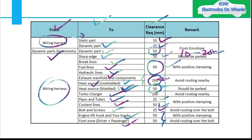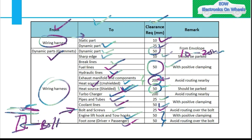For example, with bolts and screws — routing directly over a bolt should always be avoided. If this is your bolt and this is your routing path, you should always avoid that condition because most of the time it will cause contact and damage your harness. Also, if the bolt is a serviceable bolt and a service technician is opening and closing it during maintenance, it can definitely damage your harness during servicing.